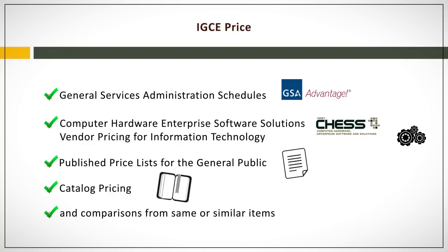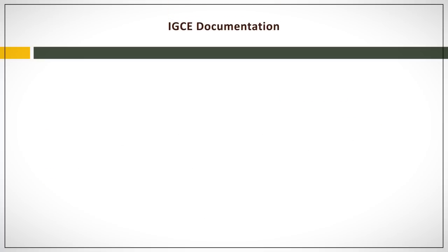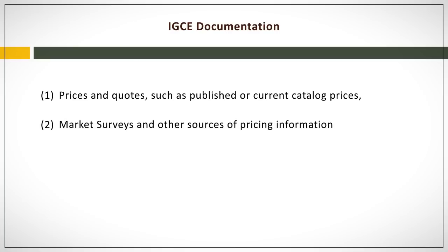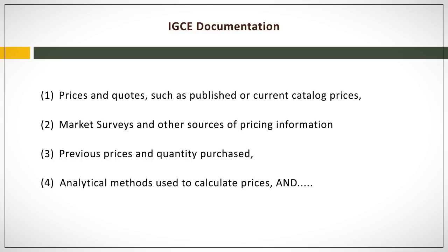Of course, the requiring activity must also consider adjustments for inflation when appropriate, as the price of an item can change over time. When the requiring activity is gathering price level information, they may ask our office to provide information on or research pricing. The contracting office should have a lot of this information already available. For price information, the IGCE documentation may include prices and quotes such as published or current catalog prices, market surveys and other sources of pricing information, previous prices and quantity purchased, and analytical methods used to calculate prices and quantity of items to purchase.